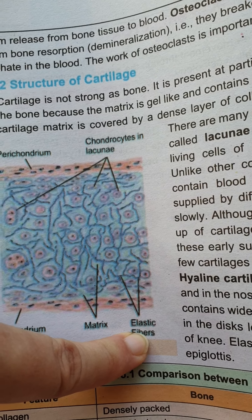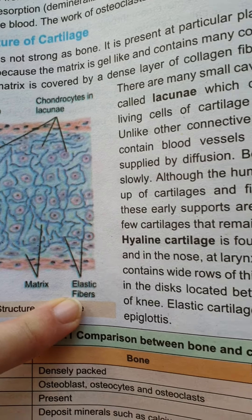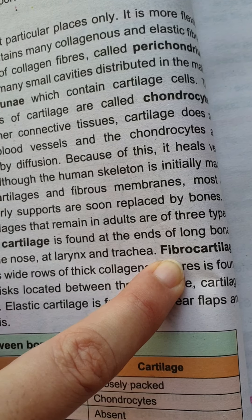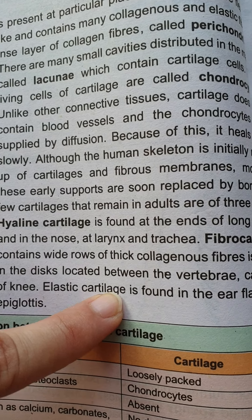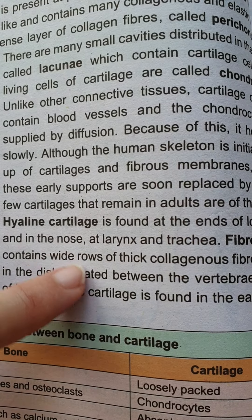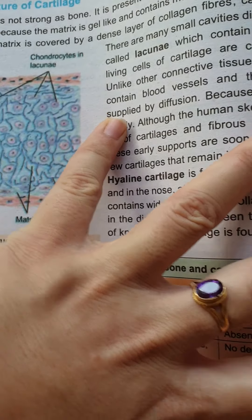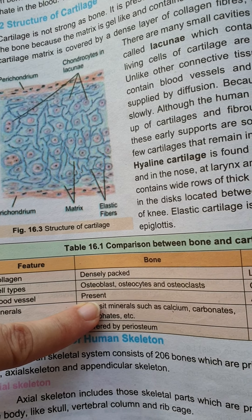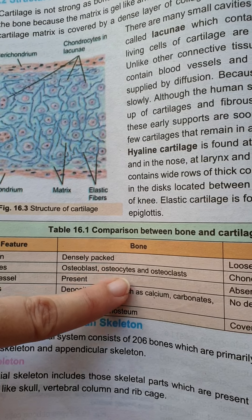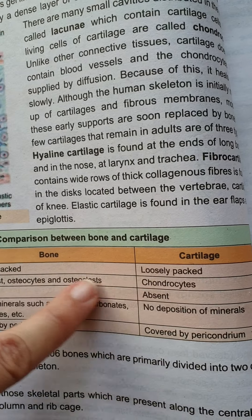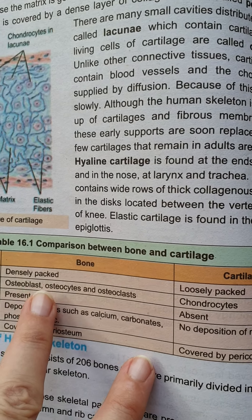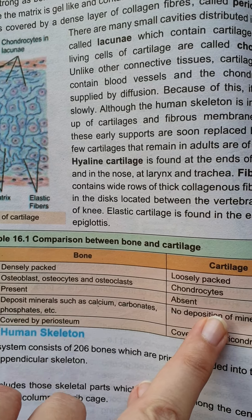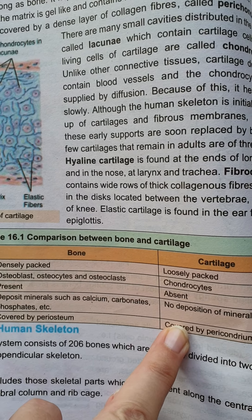The proteinaceous fibers maintaining the structure of the cartilage are known as elastic fibers. On the basis of structure and function, there are three types of cartilage: hyaline cartilage, fibrocartilage, and elastic cartilage, present in different areas of the body. A table in the book distinguishes between cartilage and bone, showing what features are present in bone but absent in cartilage, and vice versa.